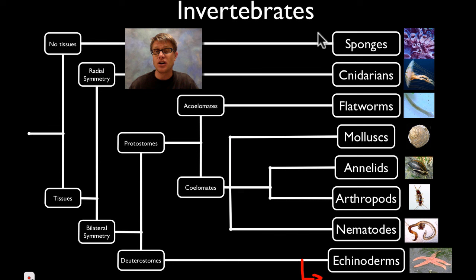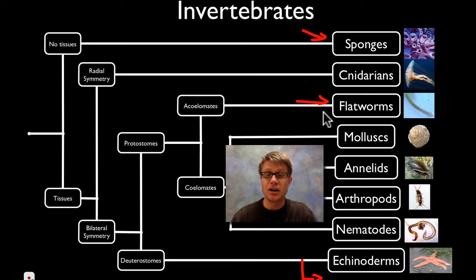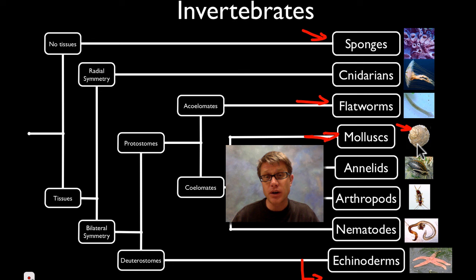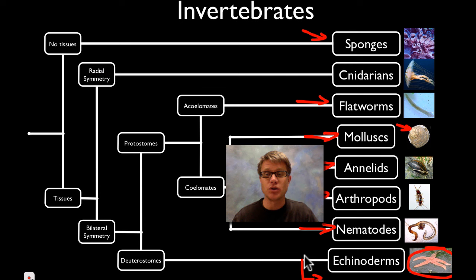Those are the invertebrates you should know. Sponges live in the ocean and take in sea water to grab material from it. The cnidarians — a lot of these are predatory. Flatworms like the planaria, and gorgeous flatworms found in the ocean. Mollusks are things that have a foot — like a clam, a snail, and even squid and octopus. The annelids are the segmented worms. The arthropods include insects and spiders. The nematodes are the roundworms. And the echinoderms are the sea stars and sea urchins.